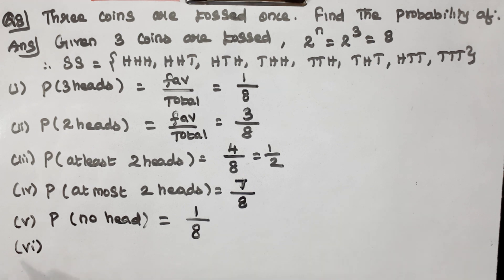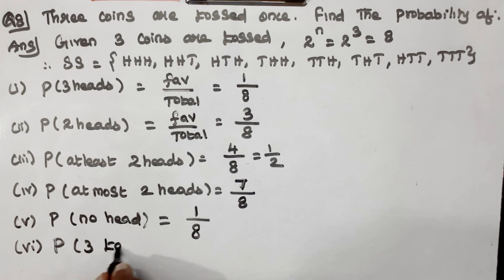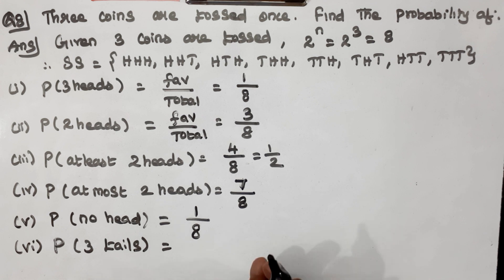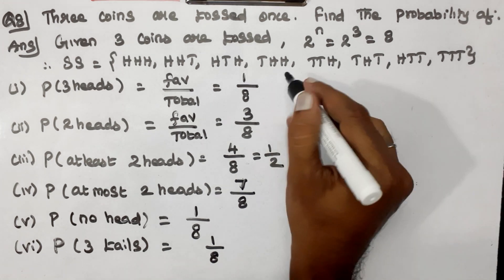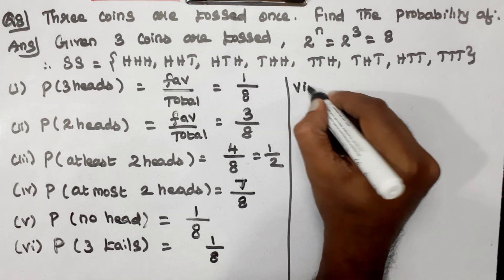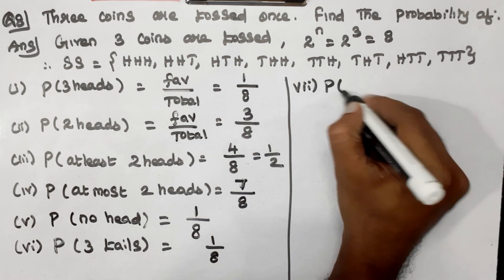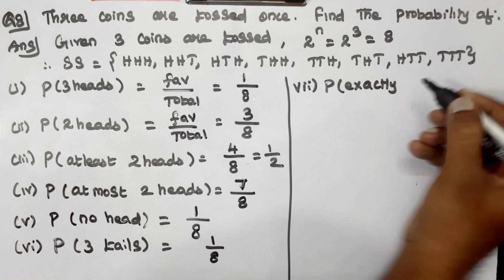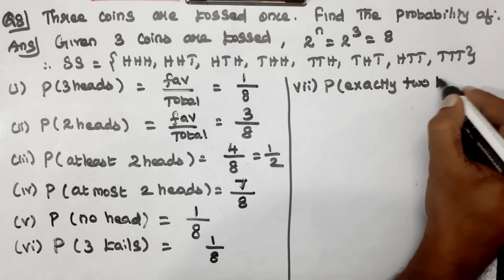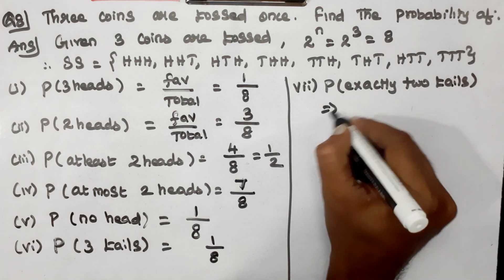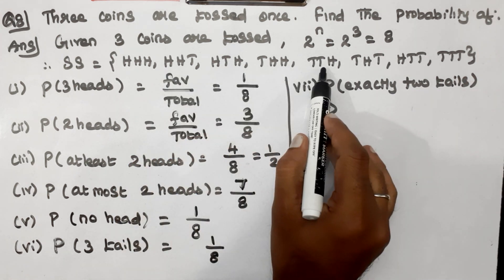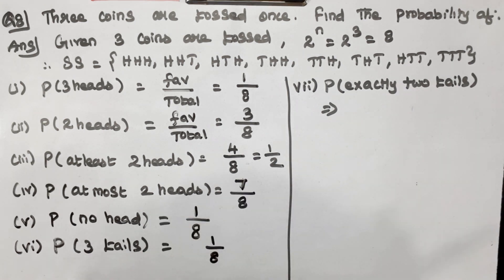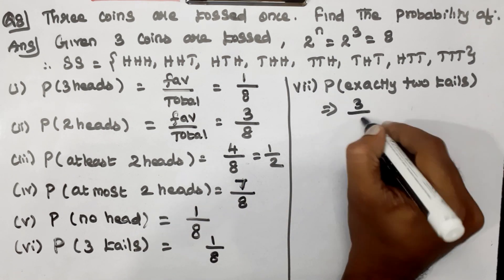Question number 6: Probability of 3 tails. The answer is 1 by 8. Question number 7: Probability of exactly 2 tails. Counting the outcomes with exactly 2 tails: 1, 2, 3. So the answer is 3 by 8.